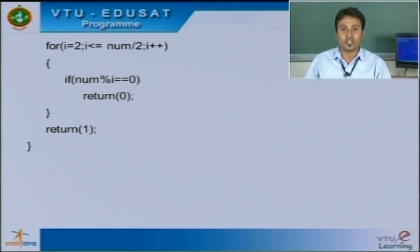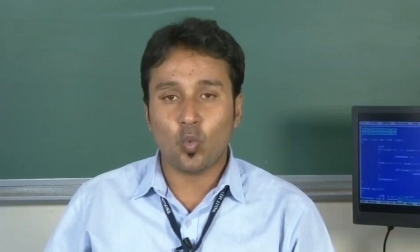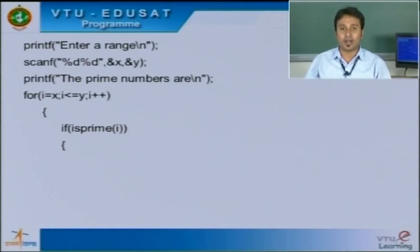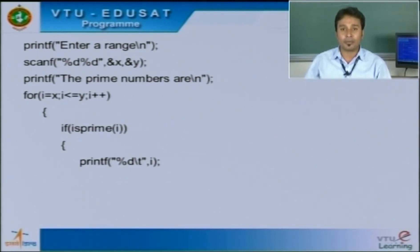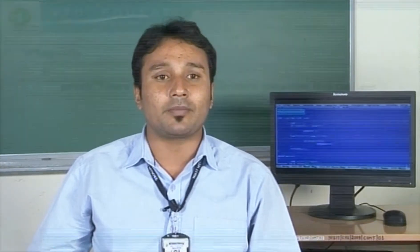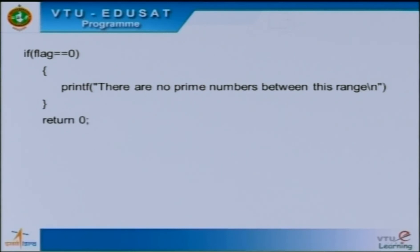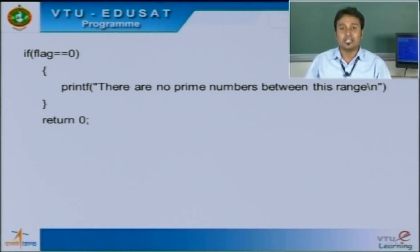At the end of the function, the control returns back to the main function. Once the number has been checked whether it is prime or not, the result is returned to the main function. If it is prime, we use %d\t to print the given number and set the flag to 1. If flag equals 0, it is confirmed that there are no prime numbers between the given range. Hence we return 0 at the end since our main function was declared as int main().